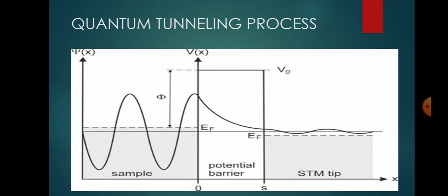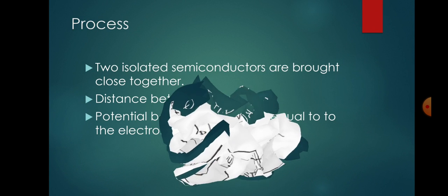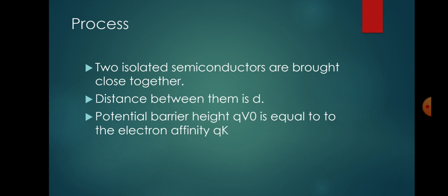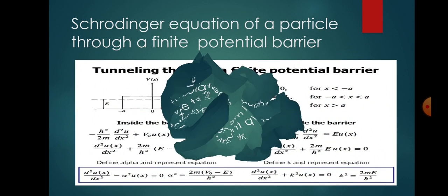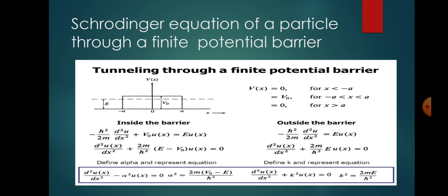In the quantum case, the particle has a finite probability to transmit or tunnel through the potential barrier. The behavior of a particle — taking the example of a conduction electron in the region where qV(x) equals 0 — can be described by the Schrödinger equation. We may use the wave function ψ, u, or v, whichever suits us.